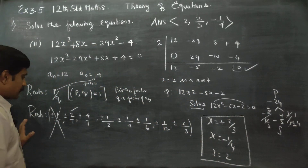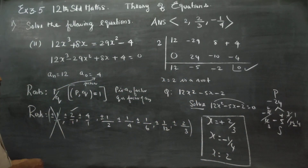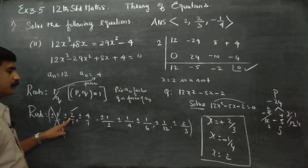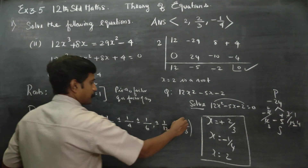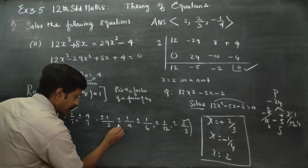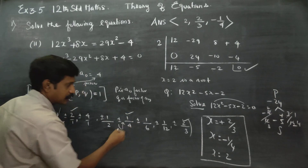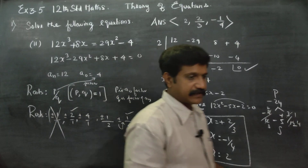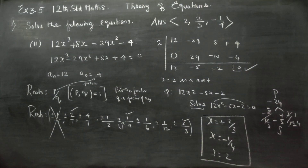These are the three roots. The solution set contains x equals 2, x equals 2 by 3, and x equals minus 1 by 4.